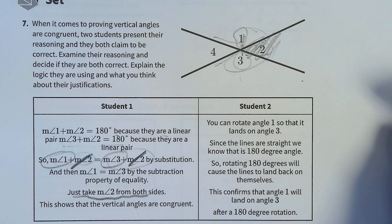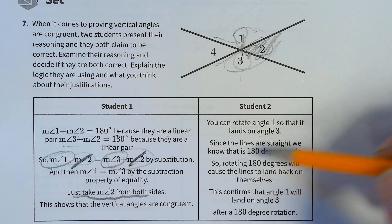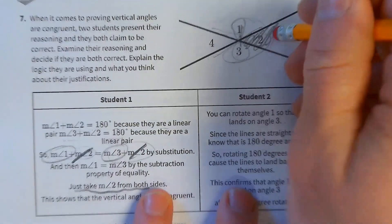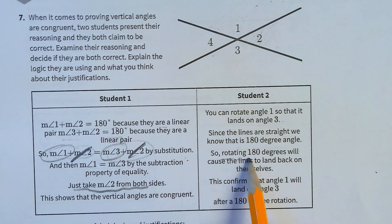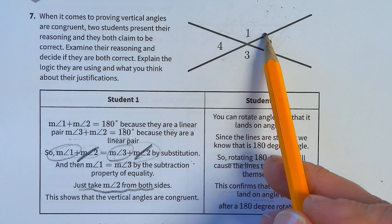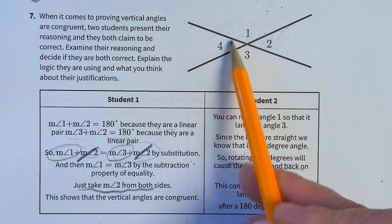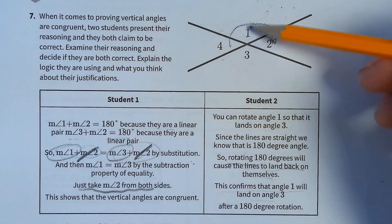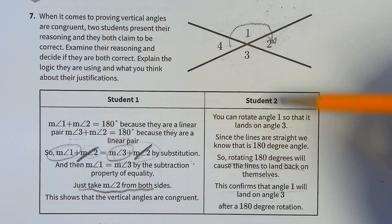So that's valid. You can rotate angle 1 so that it lands on angle 3. Since the lines are straight, we know that it is a 180-degree angle. The lines themselves are making 180 degrees. Yes, lines are 180 degrees of rotation if you wanted to rotate them. So rotating 180 degrees will cause the lines to land back on themselves. This confirms that angle 1 will land on angle 3. It's much easier for me to see that 4 will land on 2. I think it's the wideness or the vertical stack of 1 and 3. I'm much better on left to right. Anyway, also valid.